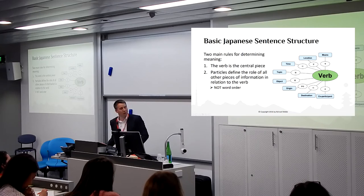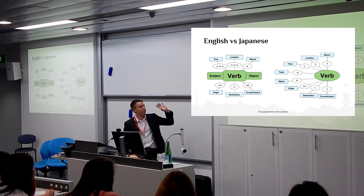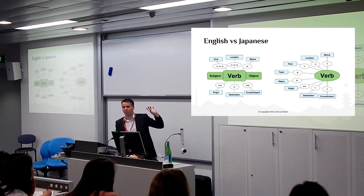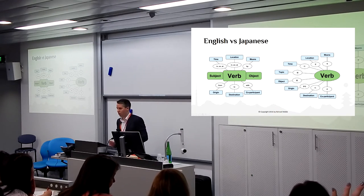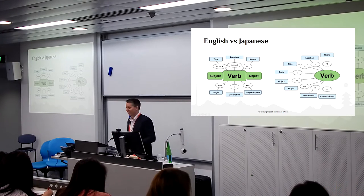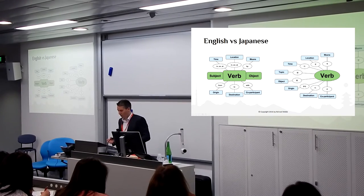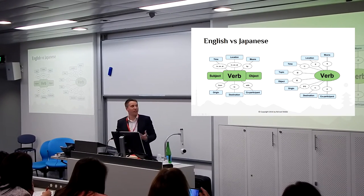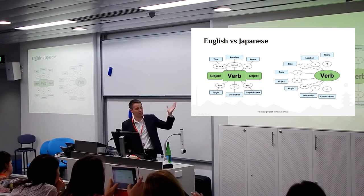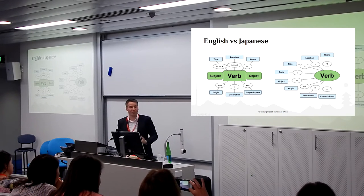So if we compare this to how English works, English is very different. Because we have subject, verb, object, and the relationship between those three words is determined entirely by word order. I've got 'topic' in the Japanese version and 'subject' in the English because I didn't want to get into the debate of 'wa' versus 'ga' today.